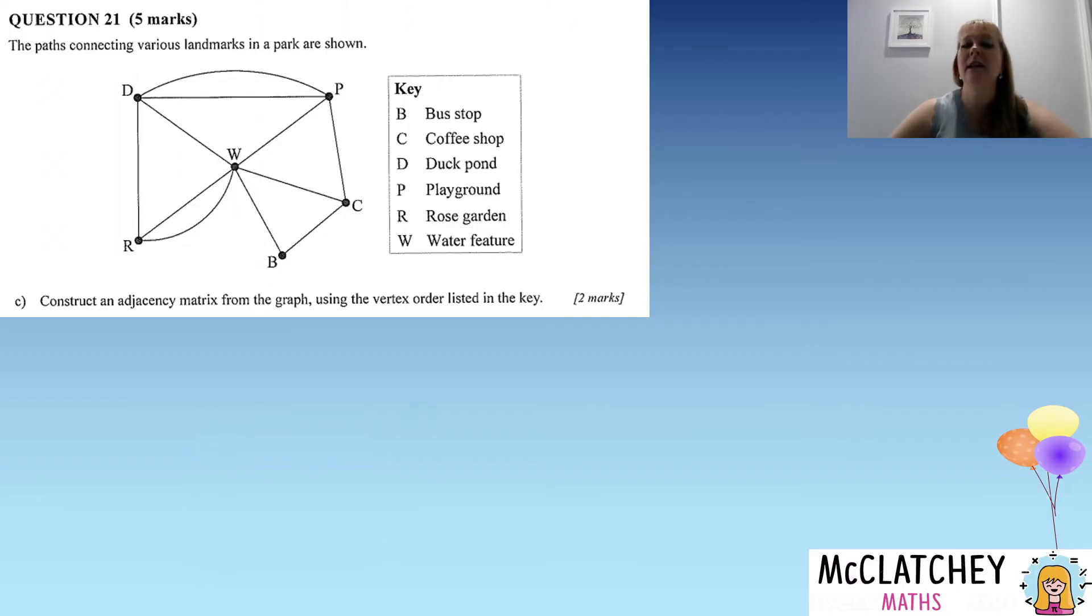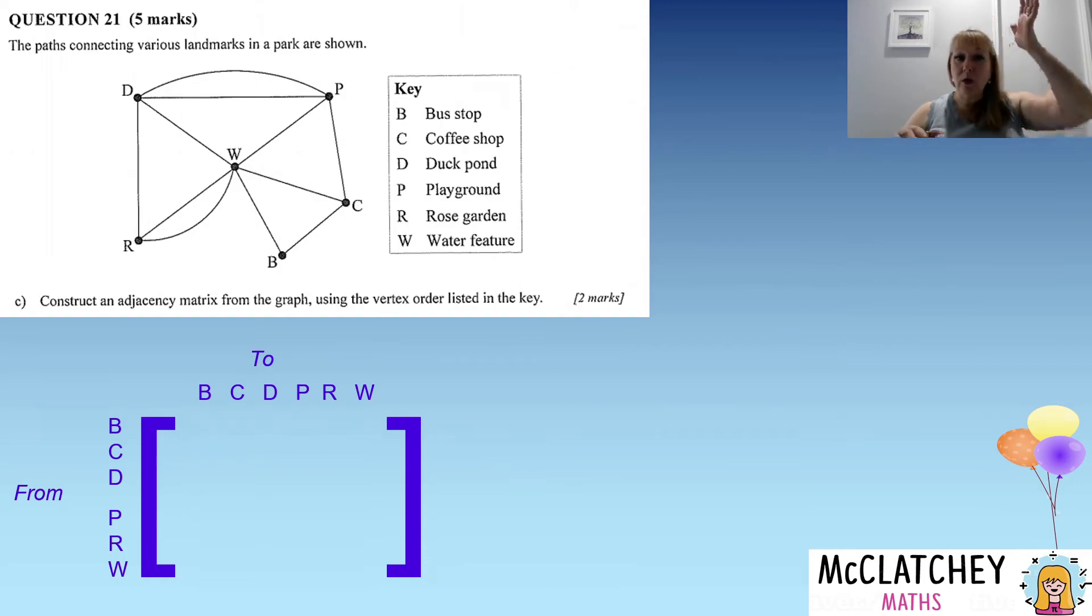Next question: construct an adjacency matrix from the graph using the vertex order listed in the key. So we need to understand here, once again, some vocabulary. What is an adjacency matrix? So a good place to start is using that order BCDPRW down one side and then across the top the same order there as well. We need to have those rectangular looking brackets and it's also good to have 'from' and 'to' labeled on the top and the bottom so that we can identify where we're going from one place to another.